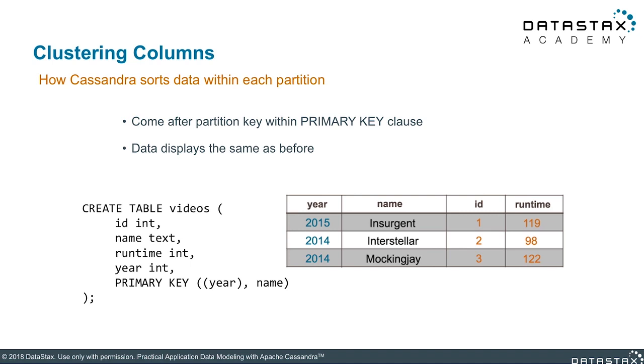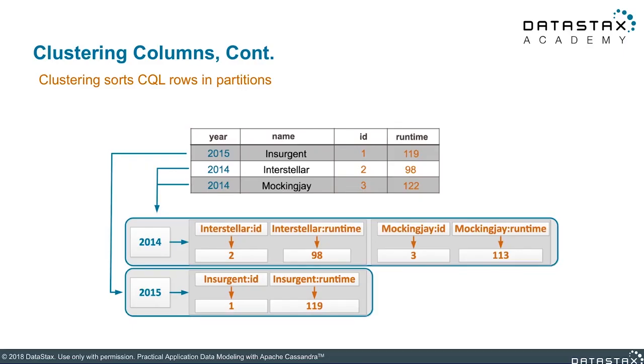If you look at the placement of the primary key — primary key is partition key, then clustering column. That's the order. The clustering column could be zero or more columns after the partition key, but you can have many of them. How many you have is really dependent on your data model and what you're trying to do with the query. If the year is a partition key, that means each one of those years could potentially be stored on a different node. The partition key gives you node locality — that puts us in a single server.